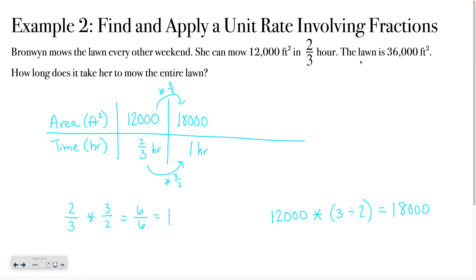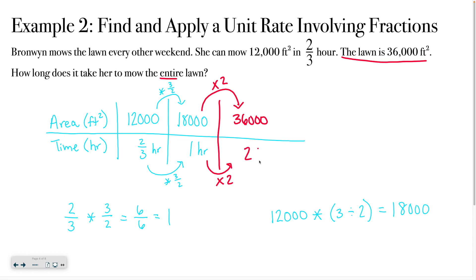Now let's go back to the question. The lawn is 36,000 square feet, so how long does it take to mow the entire lawn? I'll put 36,000 up and ask: what do I have to multiply 18,000 by to get to 36,000? That would be two. So if I multiply the top by two, I multiply the bottom by two. That means in order to mow the full 36,000 square feet, Bronwyn needs two hours. The unit rate is 18,000 over one hour — unit rate is always something over one.